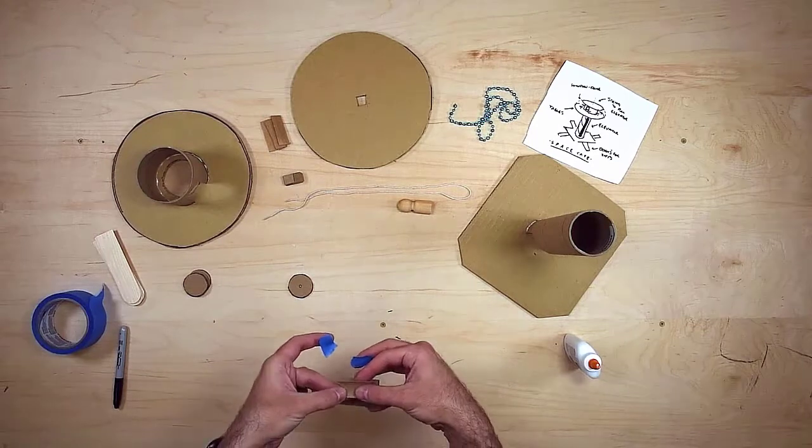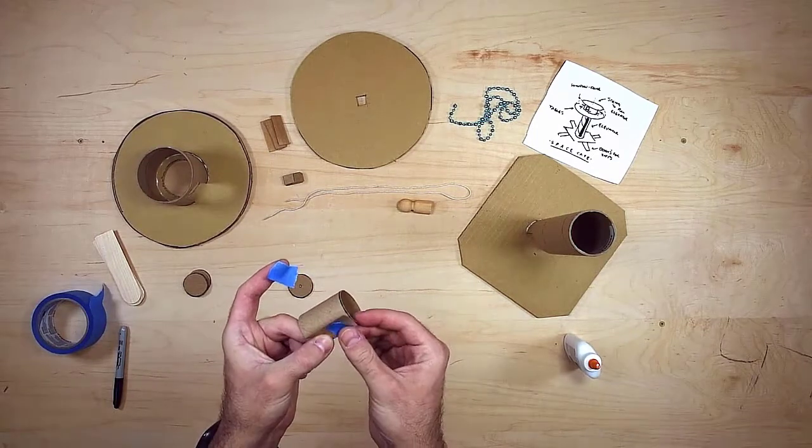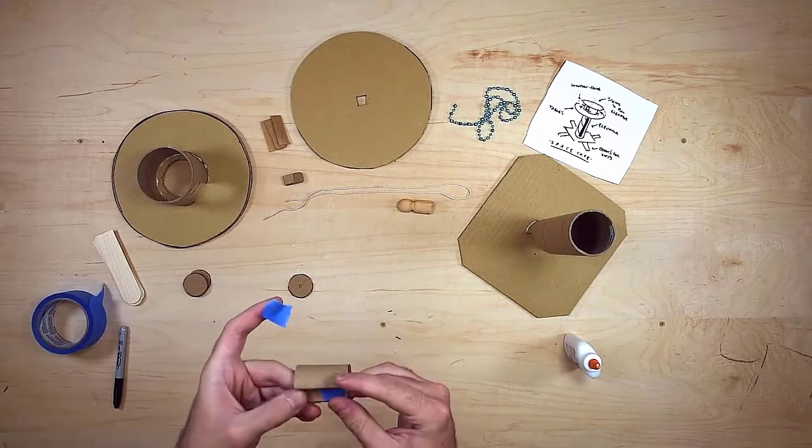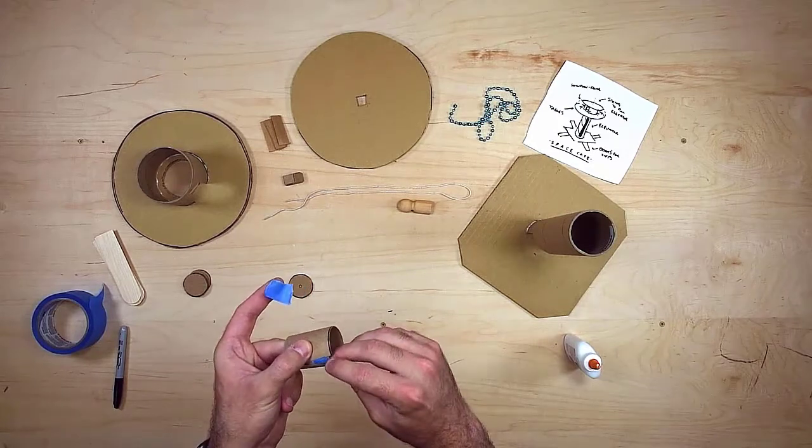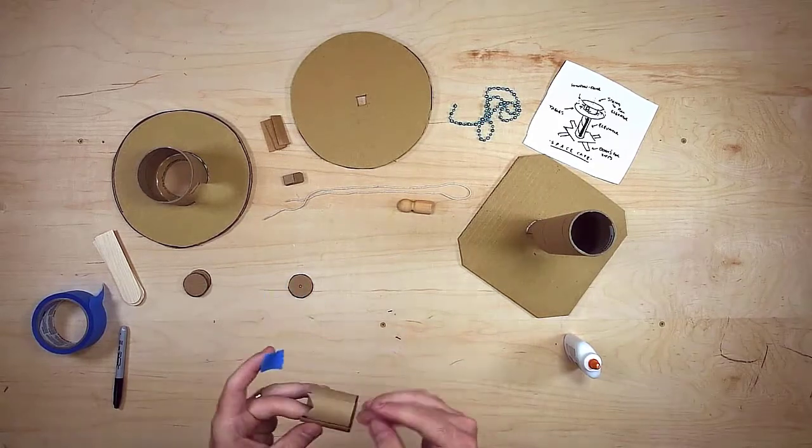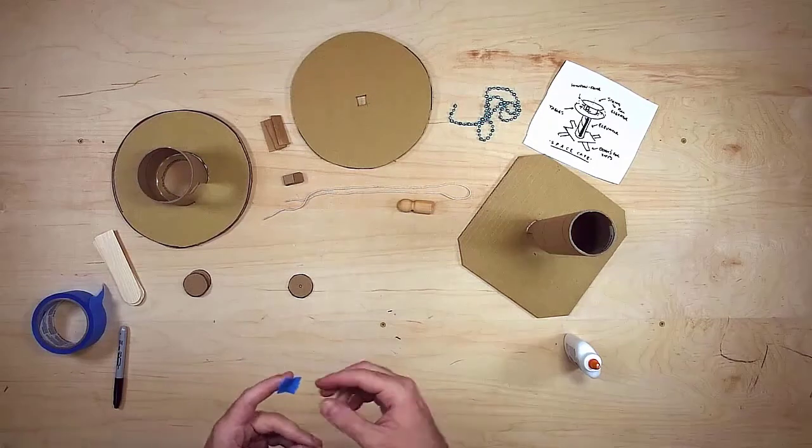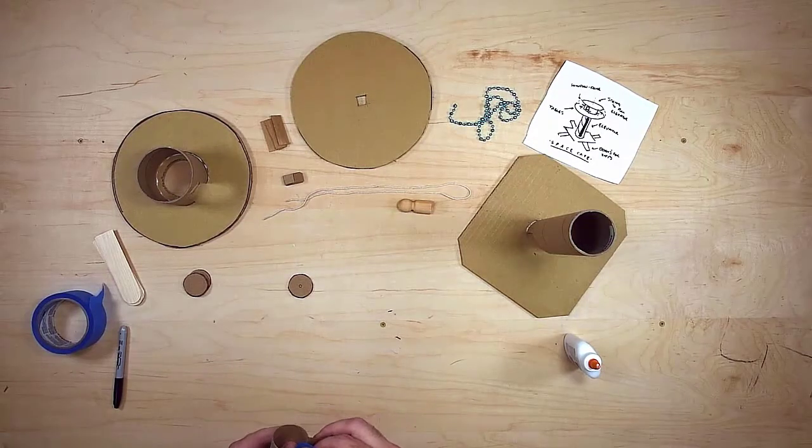My elevator is made from a simple cardboard tube with a section cut out to be the door. To get the door to work like a door, I just have to tape them together on the inside. This makes a hinge that I can use to open and close the door for my astronauts to get in and out.